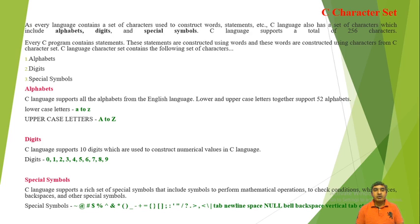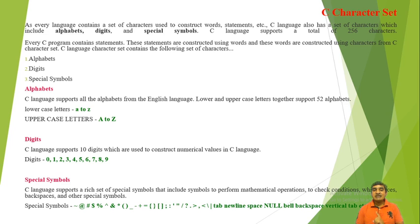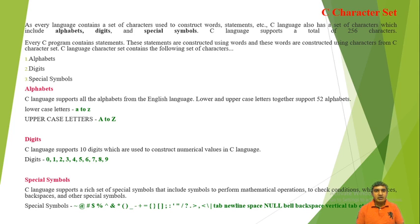C language supports 10 digits which are used to construct numerical values. These digits are zero, one, two, three, four, five, six, seven, eight and nine. We can construct any numerical value using these 10 digits — it may be a real value or it may be an integer.